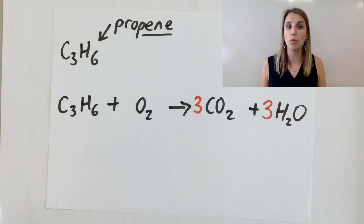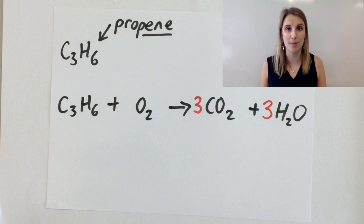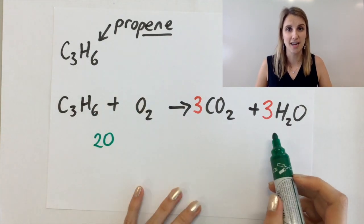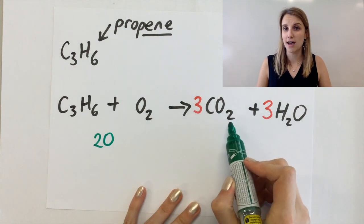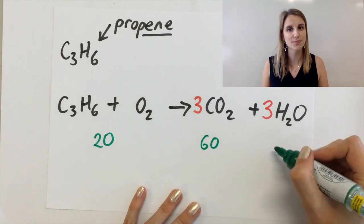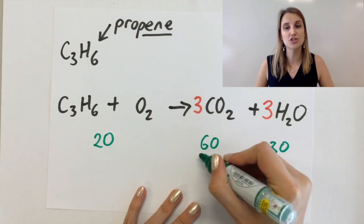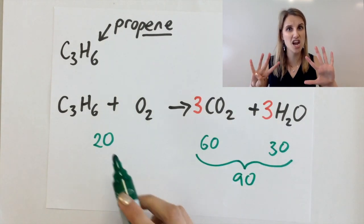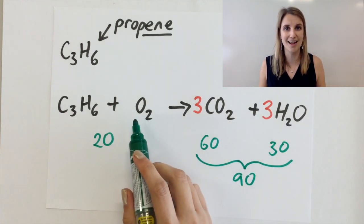Now the oxygens are what's going to cause you most of the problem. The left hand side has two oxygens in it. The right hand side has six oxygens from those three CO2s and it's got three oxygens from the 3H2O. So overall that gives me nine oxygens on the right hand side.